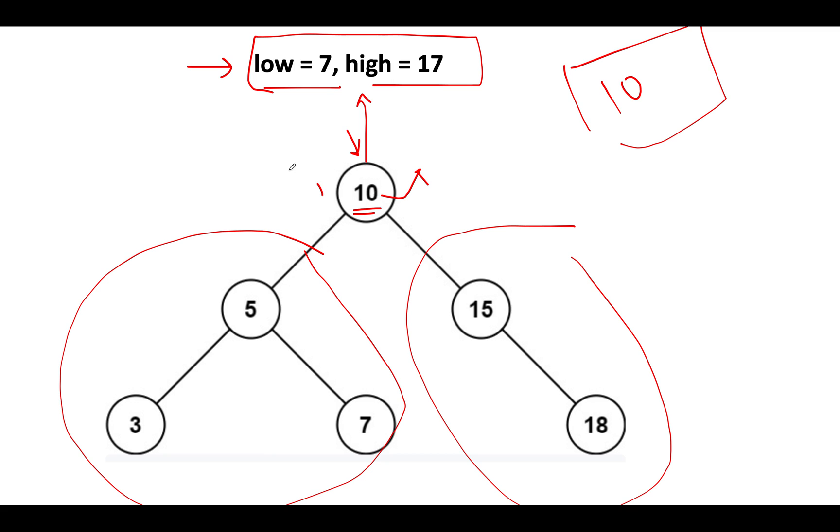Also, while invoking its left child, what do we need to take care of? We need to reduce the range that we are looking from 17 to 10, because all the elements in the left subtree will lie within the range of 7 to 10, because we have moved towards the left direction from the root node.